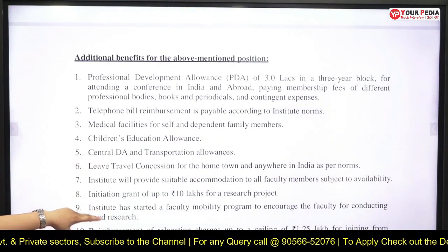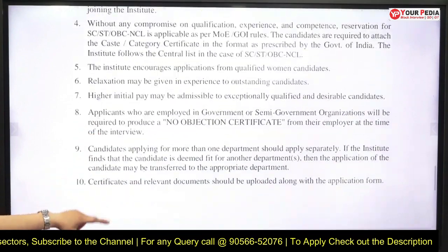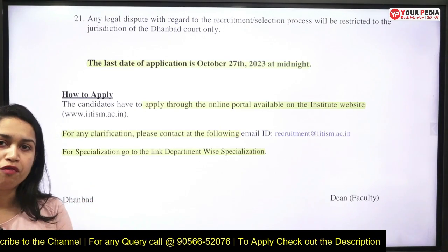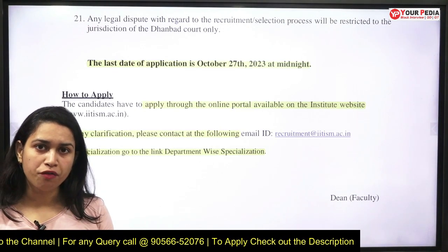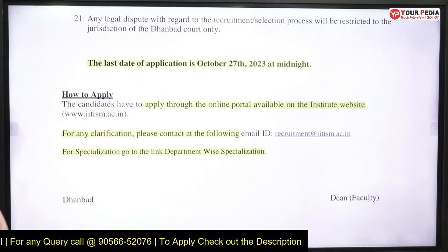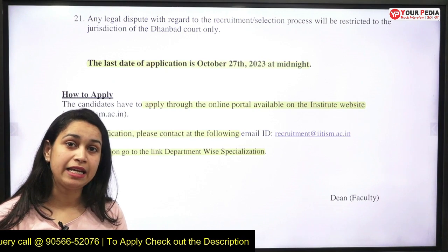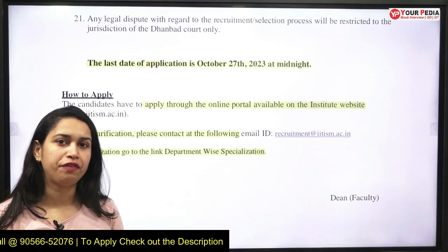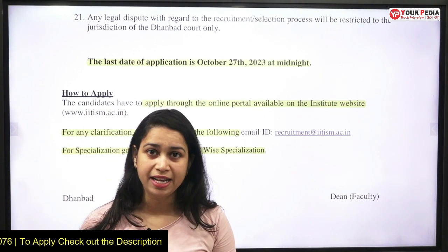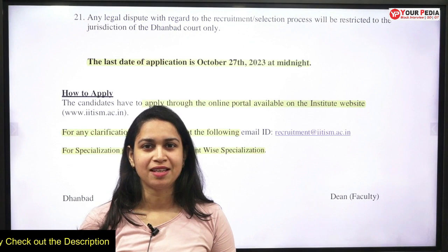Additional benefits include allowances, children's education support, and transport allowance. To apply, visit the official website of IIT Dhanbad. The deadline to apply is 27th October 2023. The complete website link and notification link are provided in the description box. All the best for your application — check your eligibility and apply for the posts.